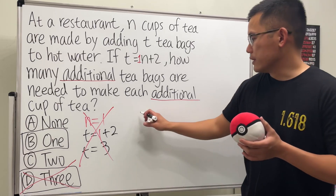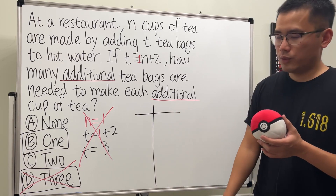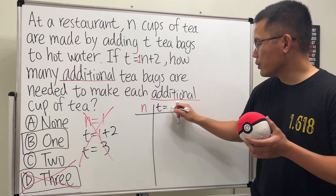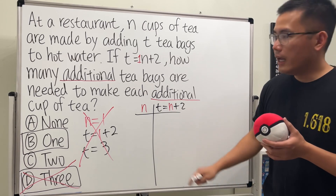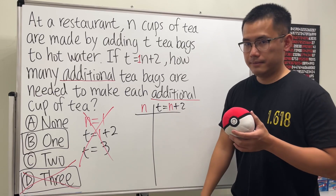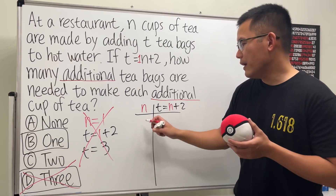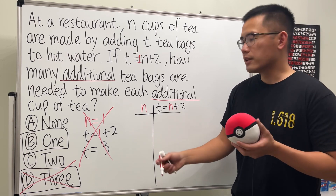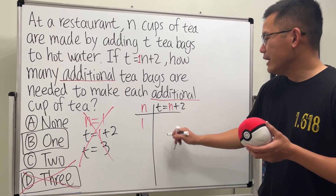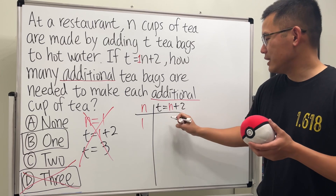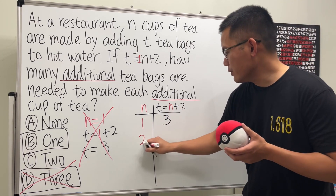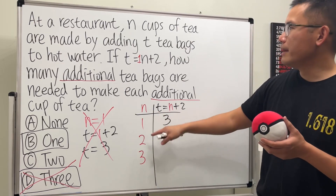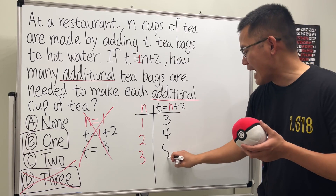Let me illustrate the idea with a quick table. This equation depends on n, and t is equal to n plus 2. n is the number of cups. If n is equal to 1, then t will be 3. If n is equal to 2, then t will be 4. And if n is equal to 3 — if you want to make 3 cups of tea — then you will have 5 tea bags.